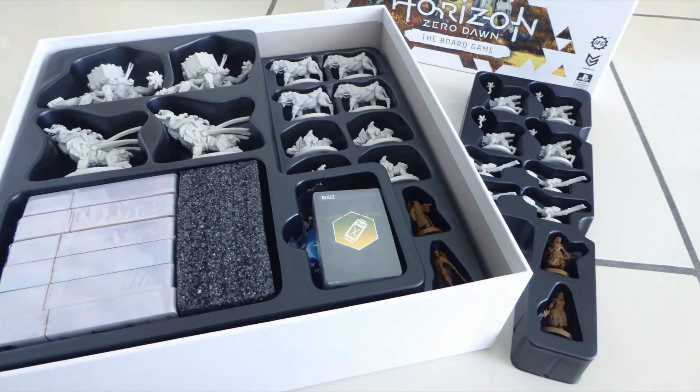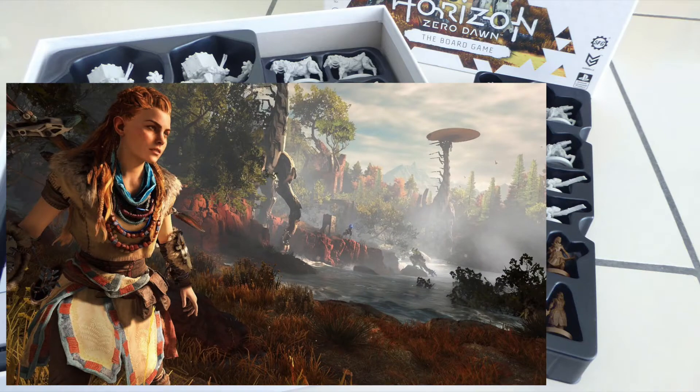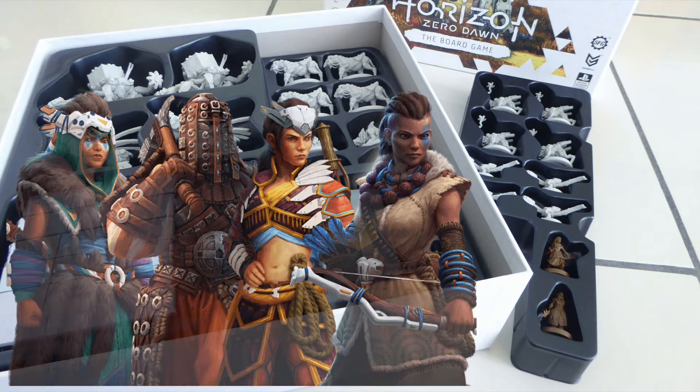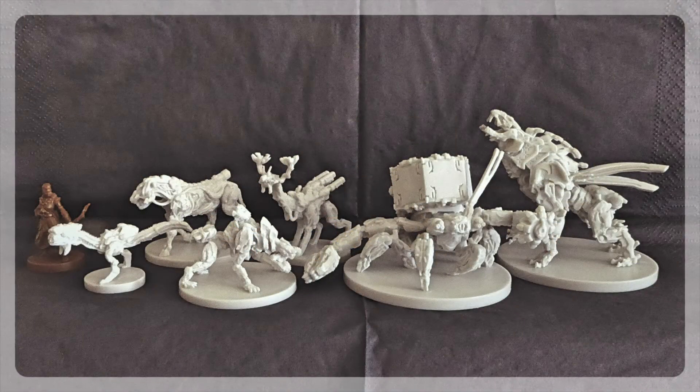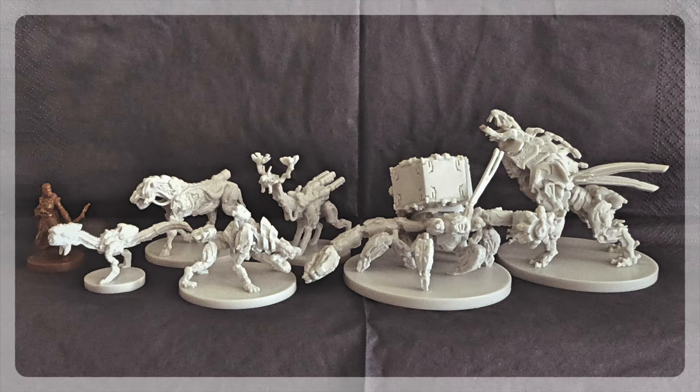The core box comes with some inlays containing quite a variety of miniatures that represent some of the machines that populate the world of Horizon Zero Dawn. The box also contains four human miniatures of unnamed characters. One of them, cast in brown plastic, is put here alongside the different species of machines that come with the core box.